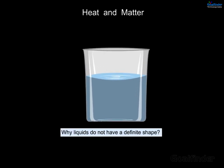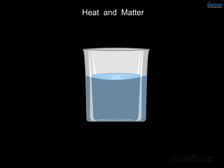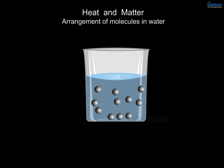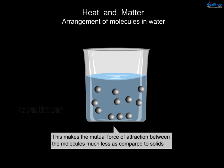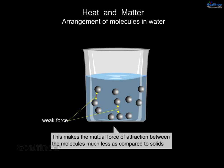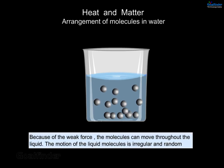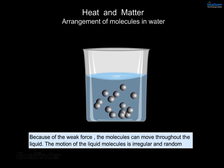Why do liquids not have a definite shape? In water, the average distance between the liquid molecules is larger than in solids. This makes the mutual force of attraction between the molecules much less compared to solids. Because of this weaker force, the molecules can move throughout the liquid — and the motion of the liquid molecules is irregular and random.